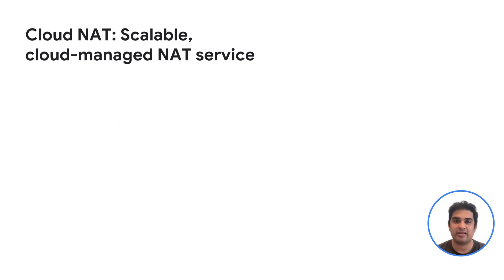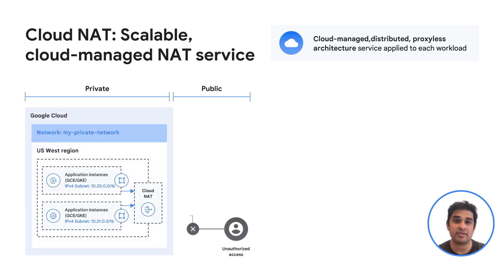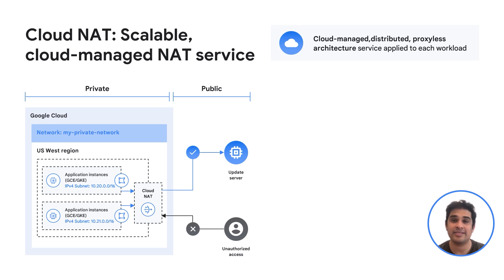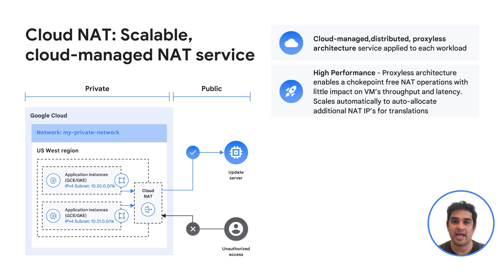Let me introduce you to Cloud NAT — GCP's scalable managed NAT service. Cloud NAT is distributed and proxy-less by design. By being distributed, it can split a single IP across multiple workloads, which is handy in situations where customers might have a limited number of IPs that are allow-listed at the destination. By being proxy-less, NAT is able to do translations directly on the workload, so there's no bump in the wire.